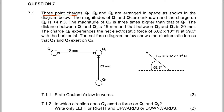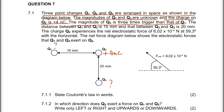It says that three point charges Q2.1, Q2.2, and Q2.3 are arranged in space as shown in the diagram below. The magnitude of Q2.1 and Q2.3 are unknown, and the charge on Q2.2 is positive 4 nanocoulombs. The magnitude of Q2.3 is 3 times bigger than Q2.1.